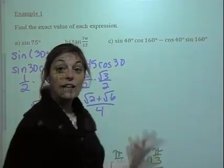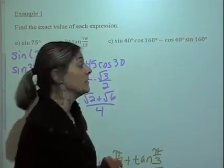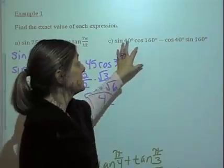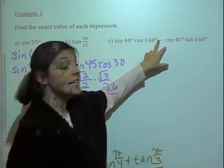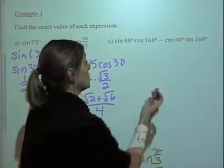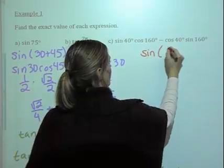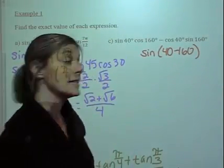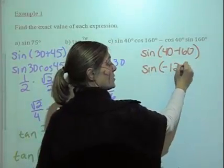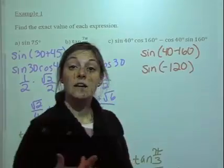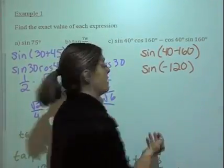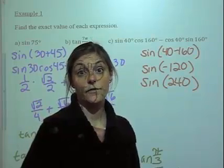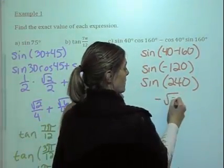Now let's take a look at part C. 40 degrees and 160 degrees are not on our unit circle. But this is a difference identity for sine, so we can say that is the same thing as sine of 40 minus 160, which is sine of negative 120. If we want a coterminal angle, we add 360, giving us sine of 240 degrees, which equals negative √3/2.